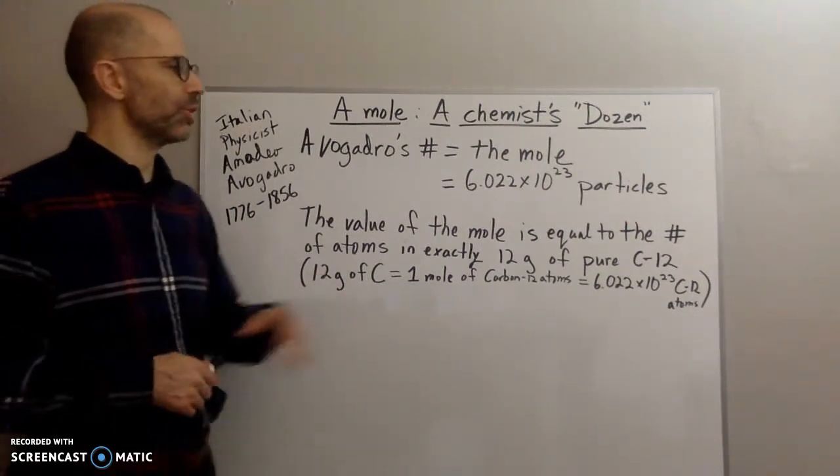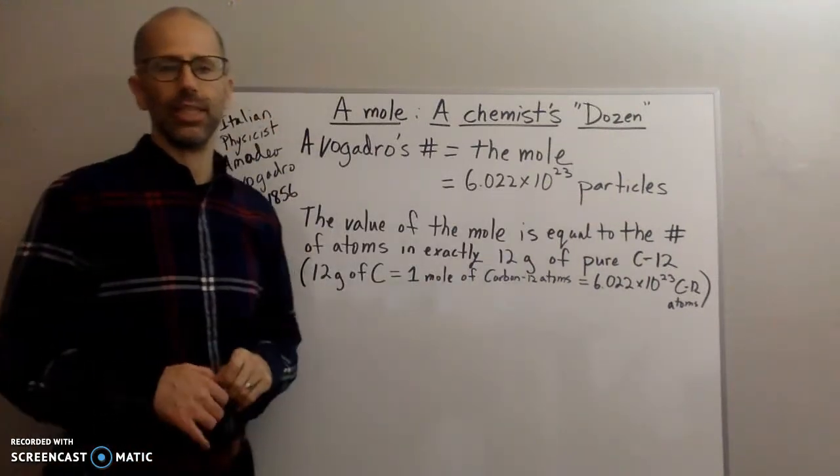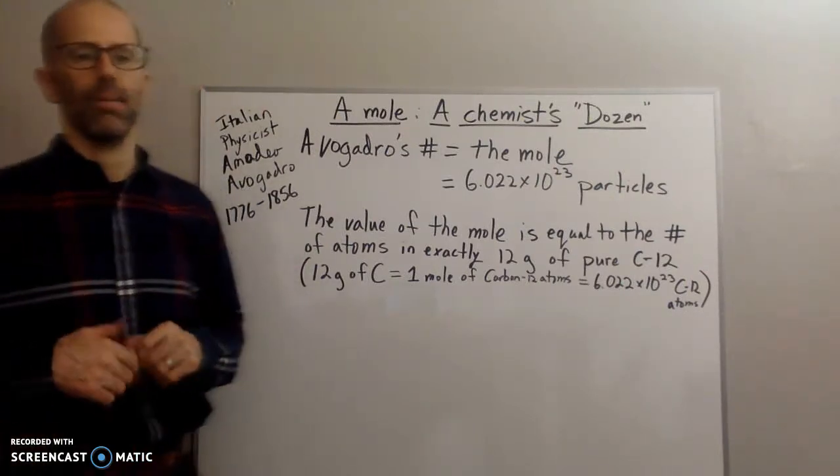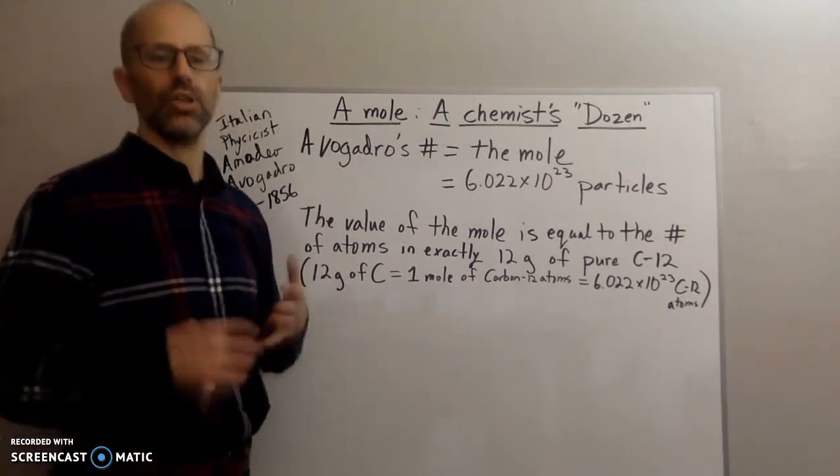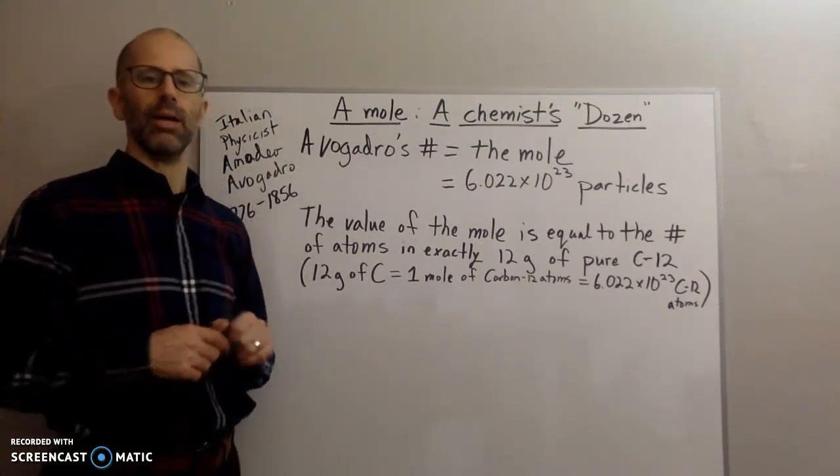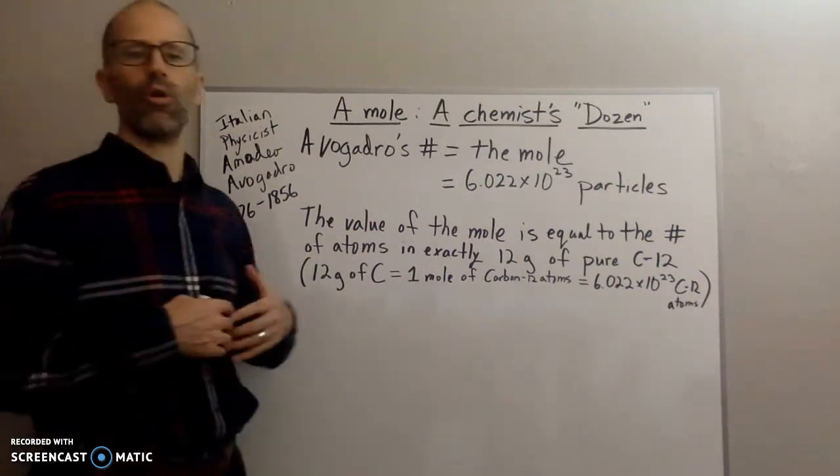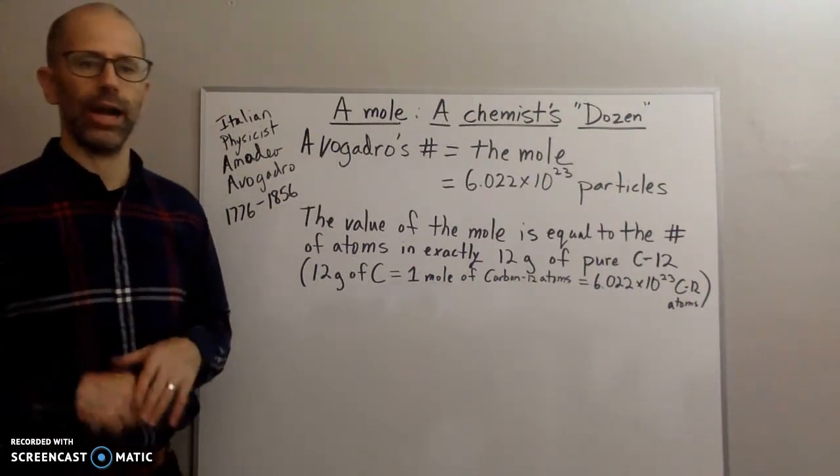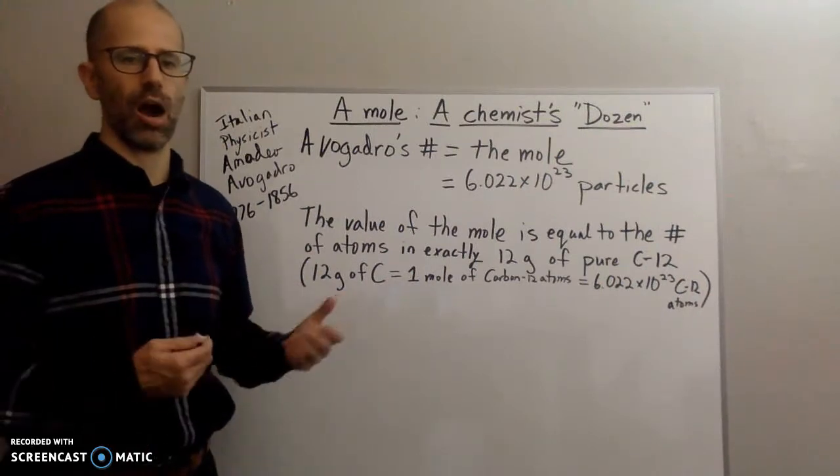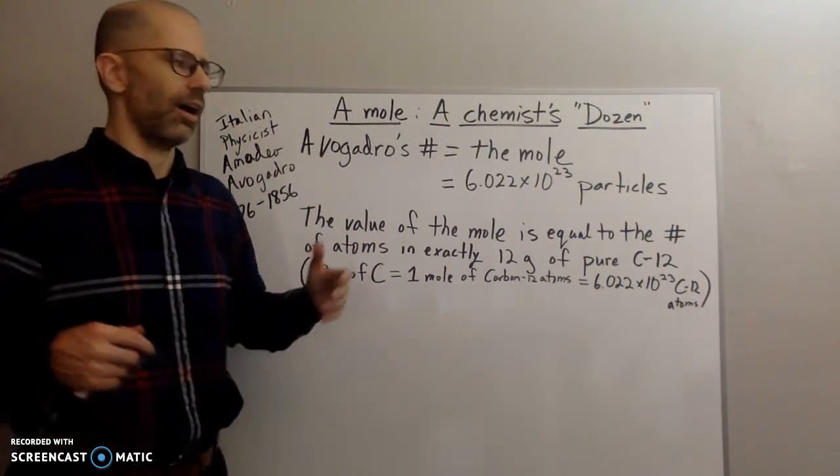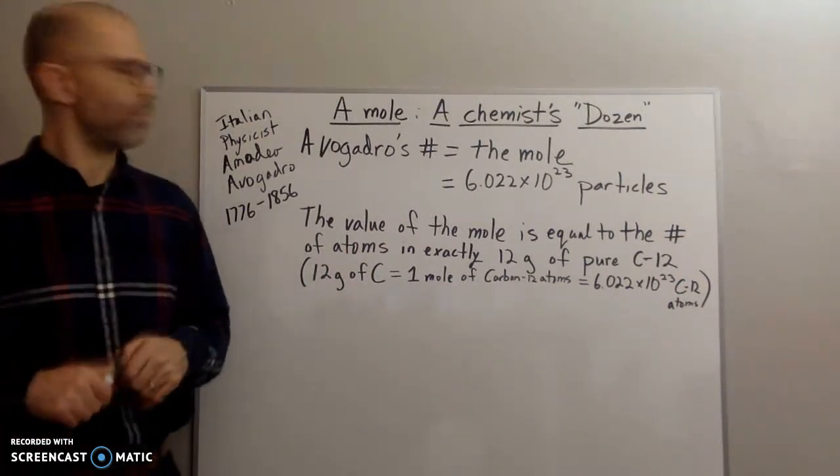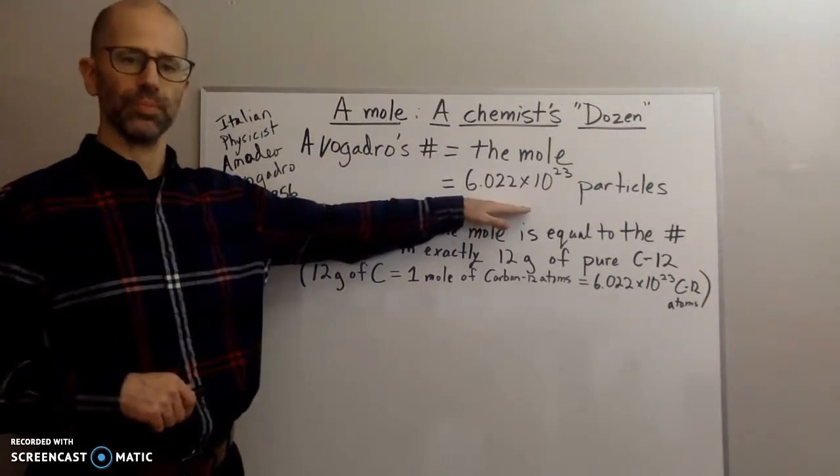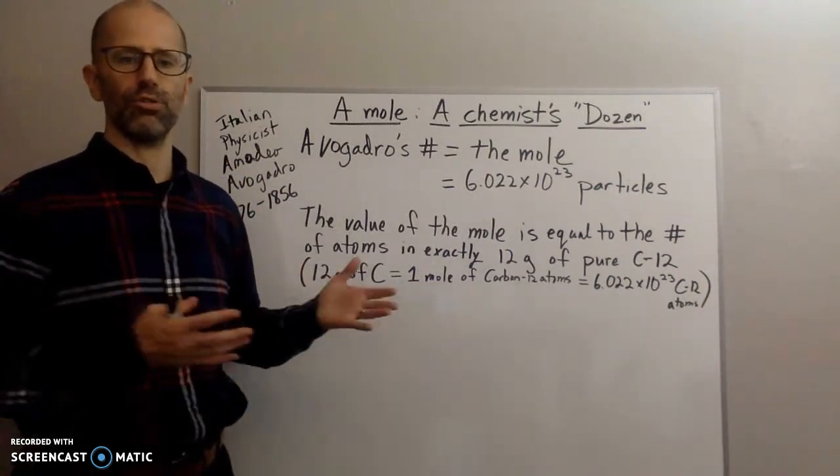In chemistry, the particles that we are interested in are really small particles like electrons, atoms, molecules, formula units. So everything really on the atomic scale. But this number can be used for any objects at all, just like the word dozen can be used for any objects at all. I can talk about a dozen cars, a dozen people, a dozen whales, whatever. The same thing about the mole.